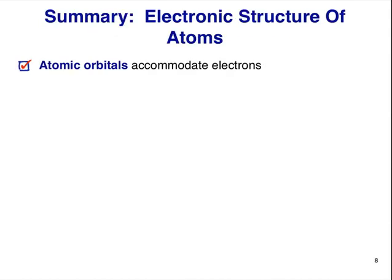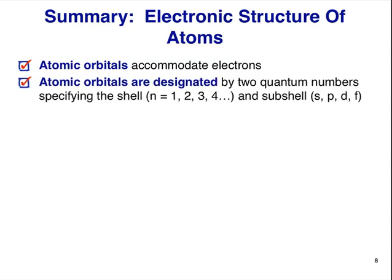So let's summarize. Atomic orbitals are the places where electrons are accommodated in the atom. Atomic orbitals are specified by two quantum numbers, the first one specifying the shell, and the second one the subshell. The first is an integer with values 1, 2, 3, 4, and so on, and the second is a letter with values s, p, d, and f.